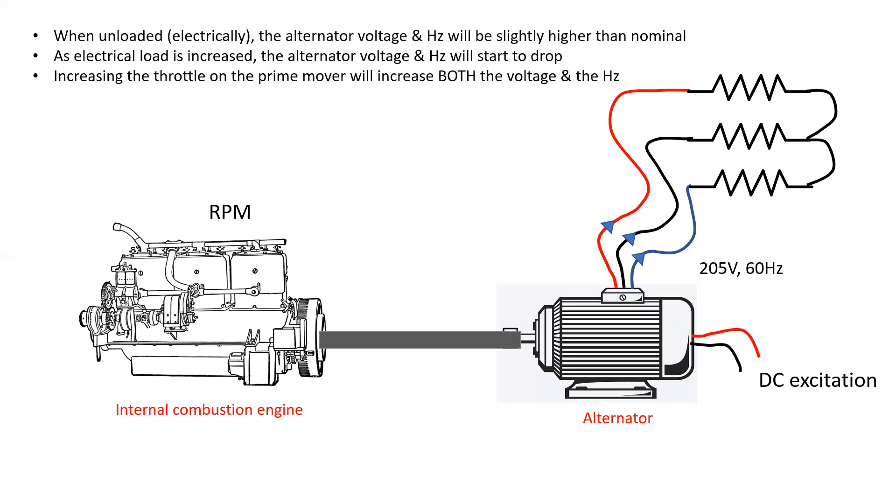Increasing the throttle on the prime mover will increase both the voltage and the hertz. So there will be automated controls to adjust the throttle on the prime mover. But there will also be controls on the DC excitation. We've brought it up to 60 hertz now, but the voltage is still low. And so the DC excitation will have to be adjusted at this point in order to get the voltage up.